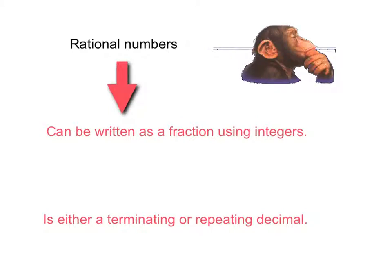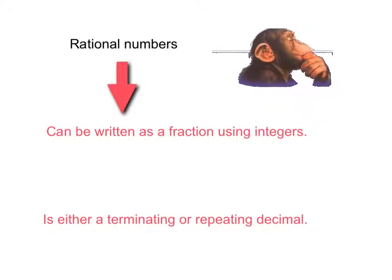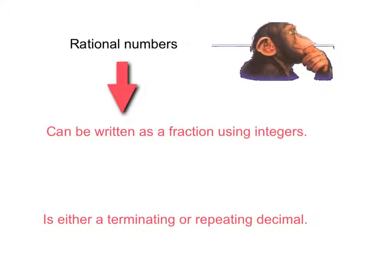Now let's talk about the rational numbers. Think about that word rational — if something is rational, that means it's sane, it makes sense. Here we have our little monkey friend; he's a rational monkey, and he's making sense of things. Rational numbers are those numbers that can be written as a fraction using integers.